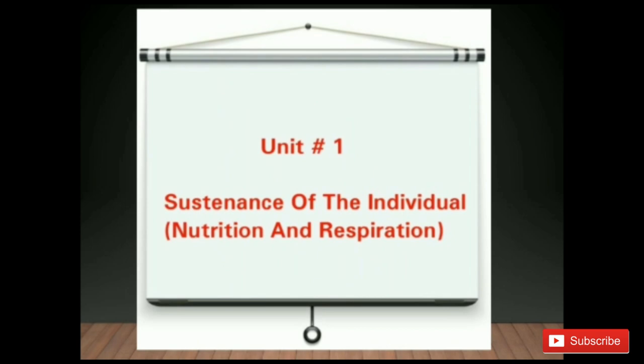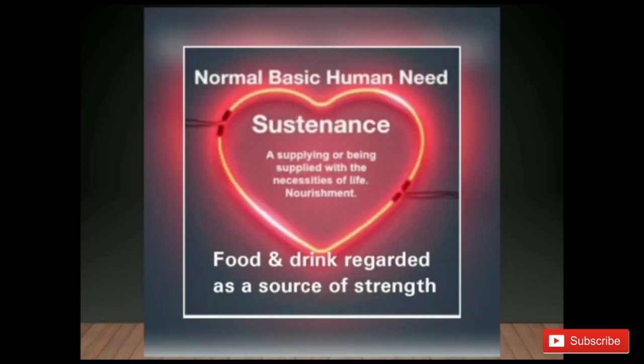First we will talk about sustenance. It means the normal basic human needs are being supplied with the necessities of life or nourishment, or food and drink regarded as a source of strength. Individual means for a particular person. So the sustenance of the individual is food or drink which a person, animal or plant needs to remain alive and healthy.